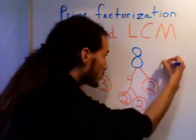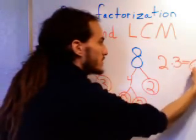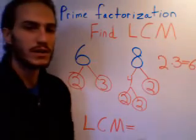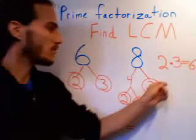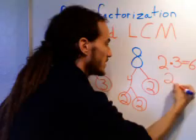So go ahead and write 2 times 3 is your 6, and then over here, let's make that nice there, and then over here we're going to write 2 cubed, because that gives us 8.